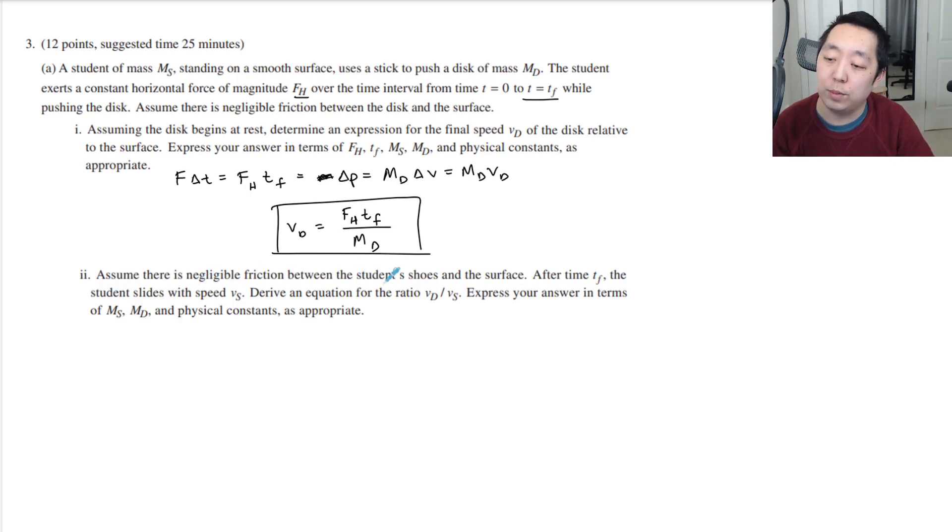Assuming there's negligible friction between the student's shoes and the surface, after time TF, the student slides with speed VS. Derive an equation for the ratio of VD to VS.